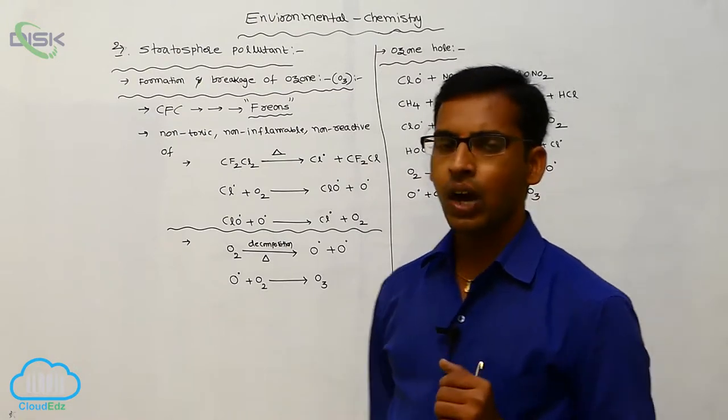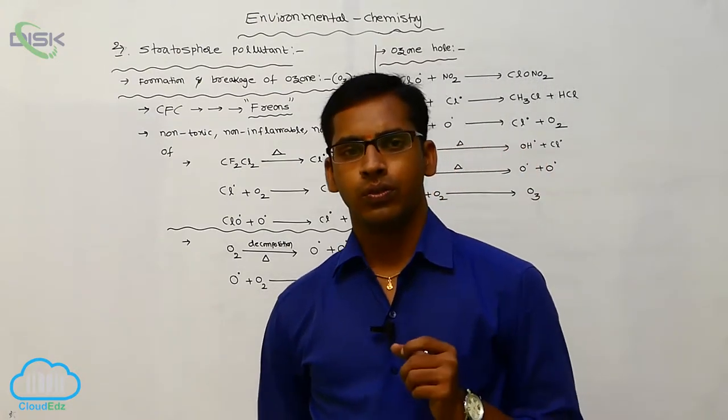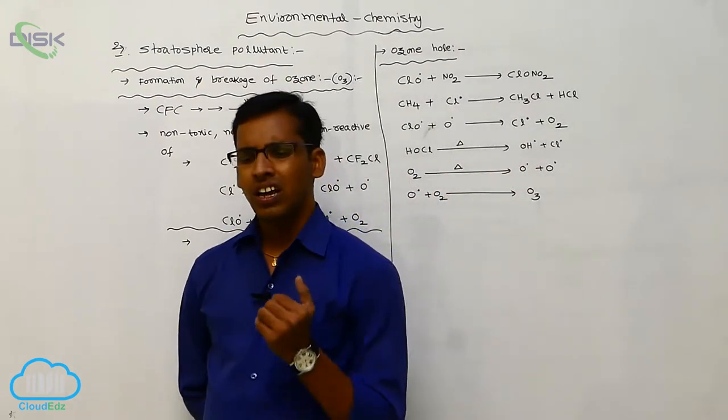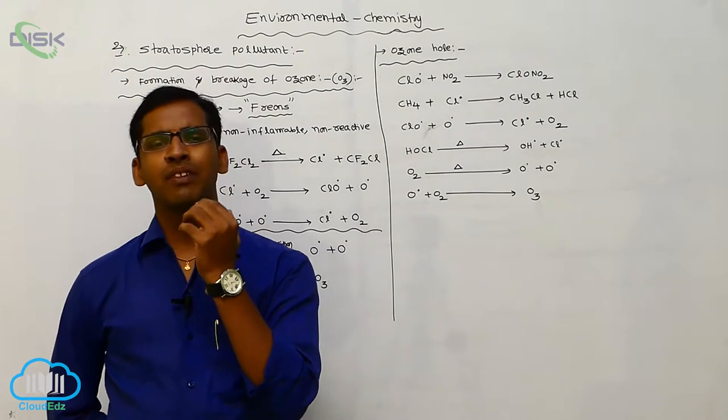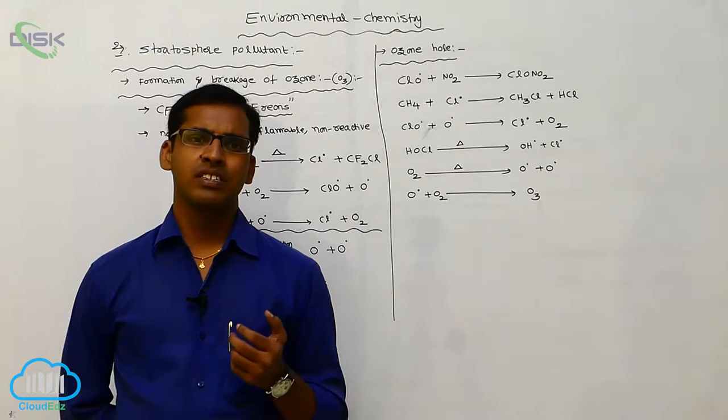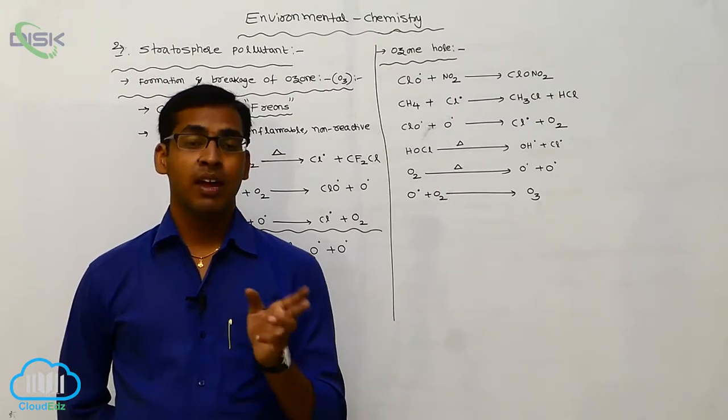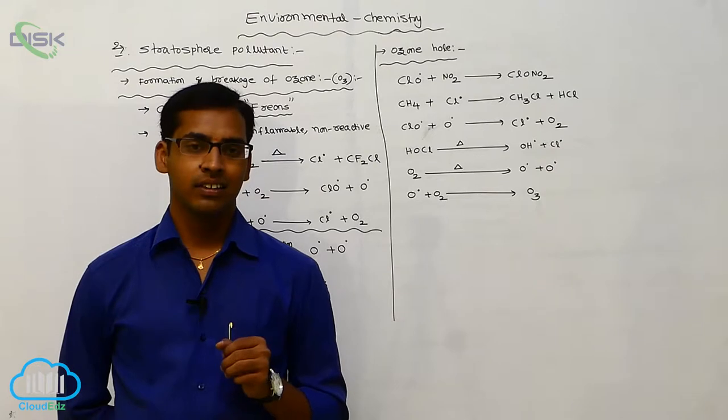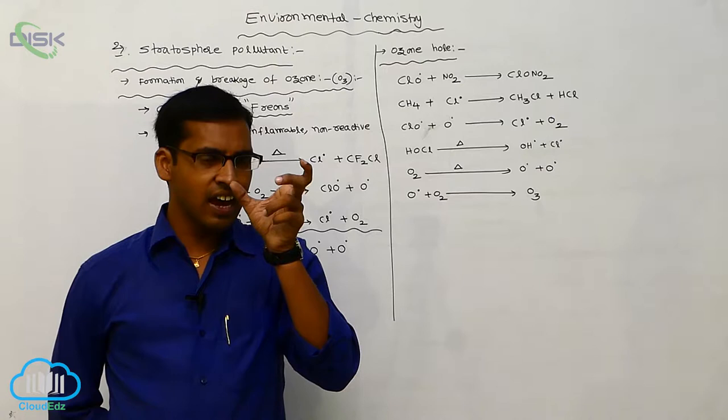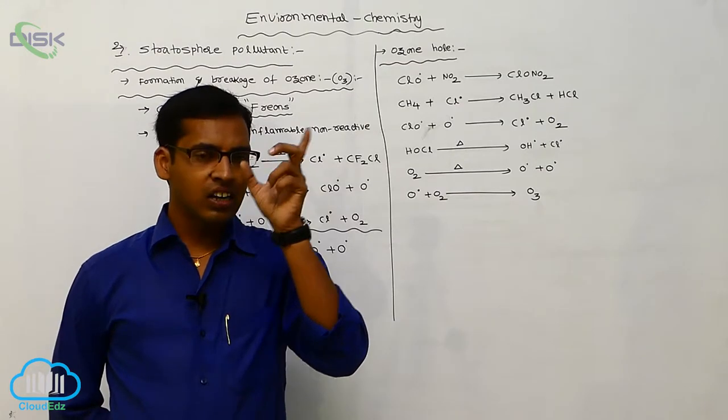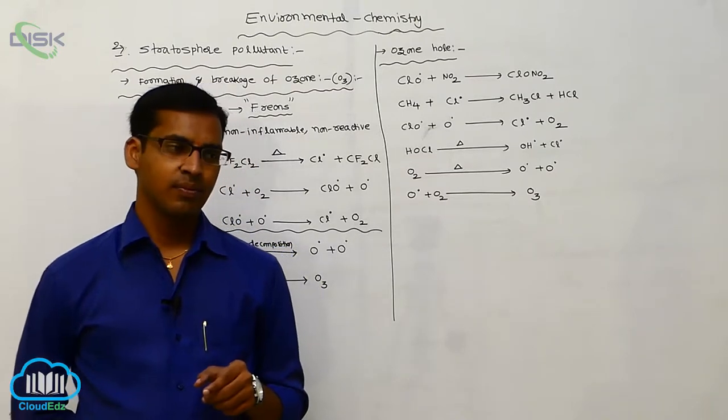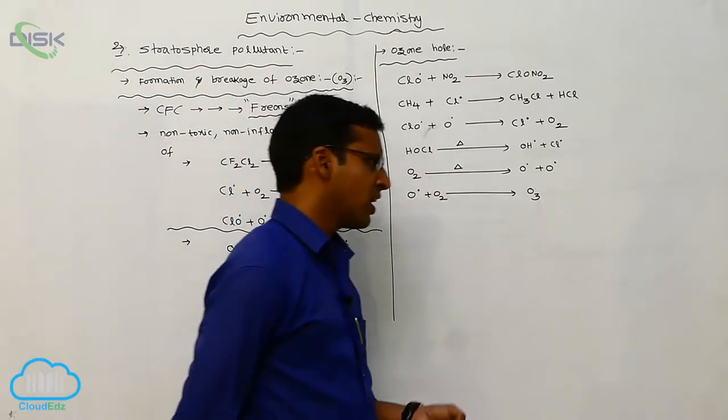And next one is effect of ozone on human being. This ozone layer depletion, the ozone rays are mainly effect on human being. It causes skin cancer, skin is damaged, or sometimes it leads to death. It means the ozone rays are interact with ultraviolet light. It causes skin cancer, and also it mainly effect on the plant.